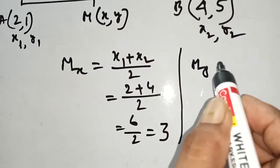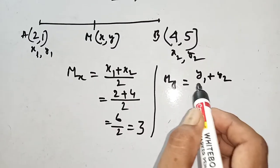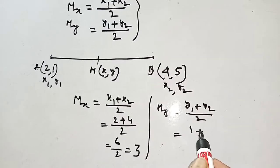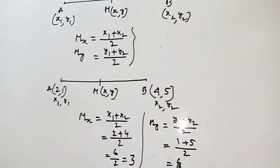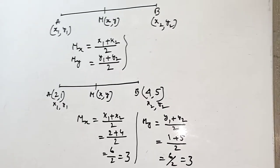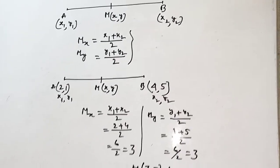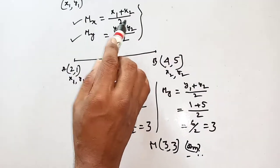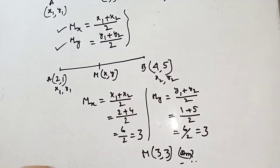my equals y1 plus y2 by 2. y1 means 1, y2 means 5, so 1 plus 5 by 2 equals 6 by 2, equals 3. That means the midpoint of AB is (3, 3). This is the answer. The midpoint formula is: mx equals x1 plus x2 by 2, and my equals y1 plus y2 by 2.